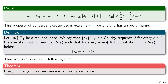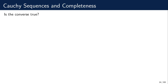Mathematicians always like to ask about the converse: is it true? That is, suppose we have a Cauchy sequence — does it necessarily mean that the sequence converges? This question pretty much leads us to the notion of completeness, because the convergence of a Cauchy sequence depends on the space in which we are having the discussion.